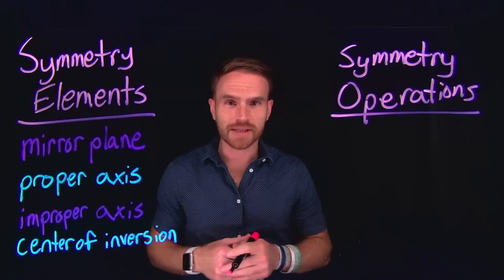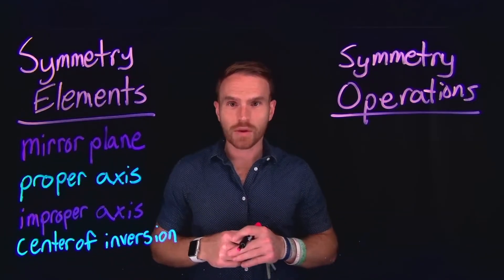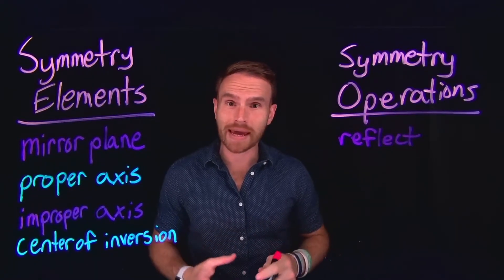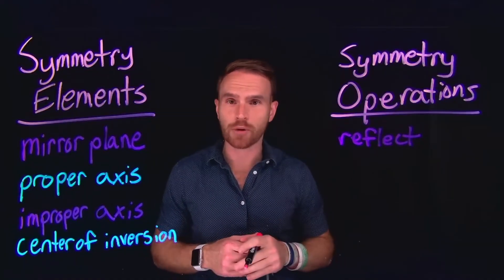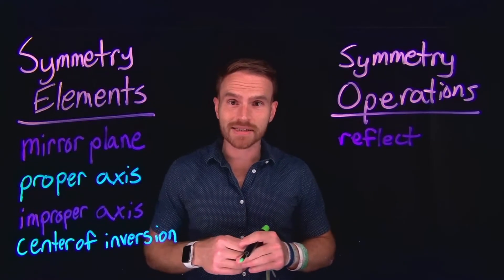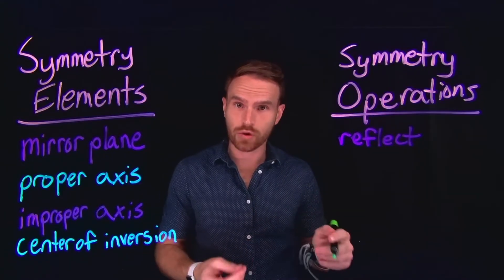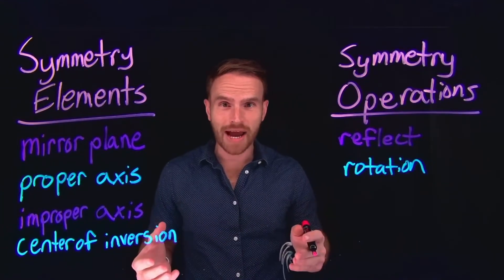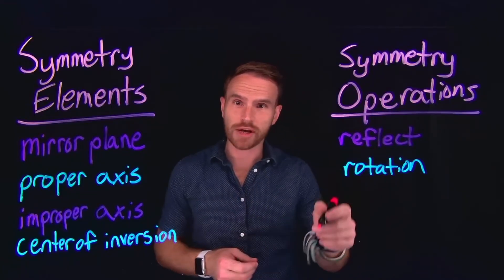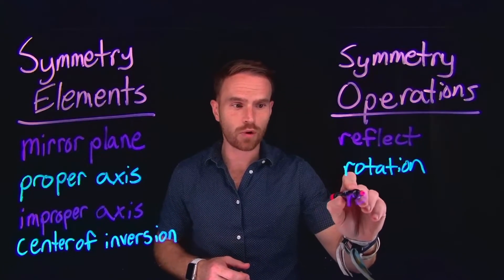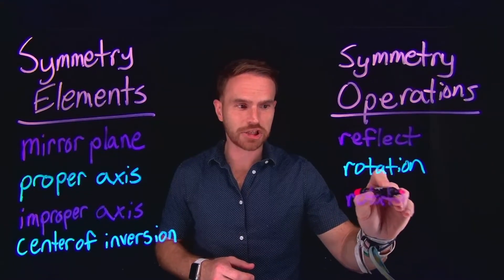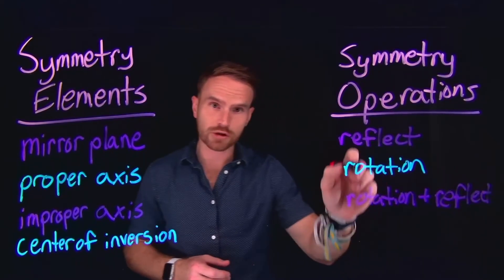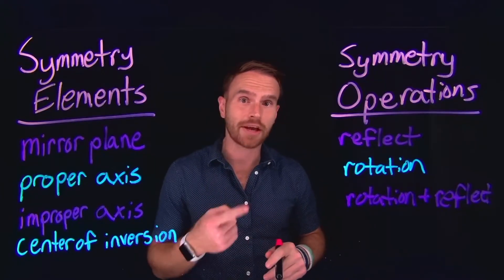Some examples of those symmetry elements begin with a mirror plane. When you place a mirror plane on an object and reflect through it, and the molecule remains unchanged, we say that's a symmetry operation that molecule possesses. A proper axis is an axis or line through a molecule where you perform a rotation, leaving the molecule unchanged. An improper axis combines those two symmetry operations — a rotation along the principal rotation axis followed by reflection through a mirror plane.